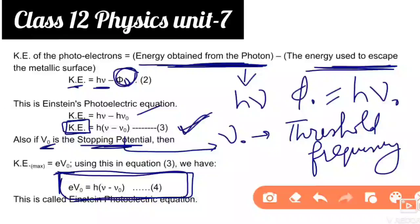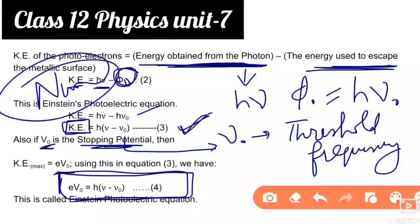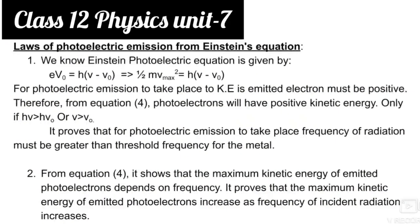The final equation eV₀ = h(μ − μ₀) is the Einstein photoelectric equation. This will be used heavily in numericals, so numericals based on this are very important. If you want to skip this article you can, but you must learn the formulae properly. Next, the most important topic: Laws of Photoelectric Emission from Einstein's equation — a 3-mark question.